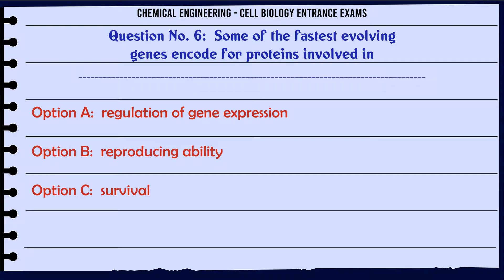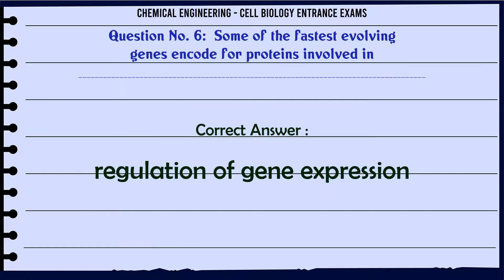Some of the fastest evolving genes encode for proteins involved in? A. Regulation of gene expression. B. Reproducing ability. C. Survival. D. Prevention of infection. The correct answer is Regulation of gene expression.